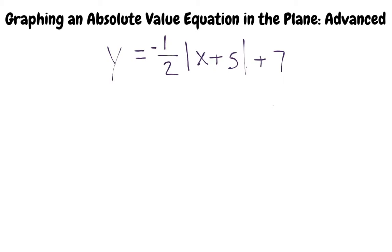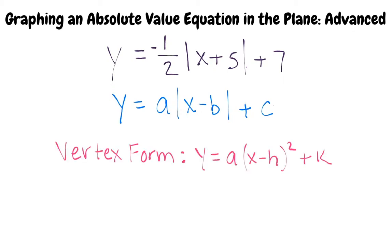First, let's examine the general form of this equation to help us visualize the graph. Do you remember what happens to the shape of the graph when changing the values for a, b, and c? I think so, since it's similar to the vertex form of quadratic equations. I believe that a changes the slope of the graph, b translates the graph left to right, and c translates the graph up or down.